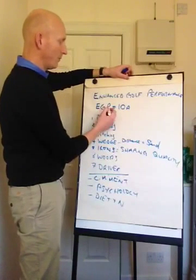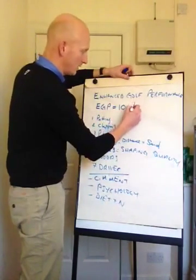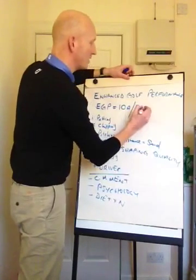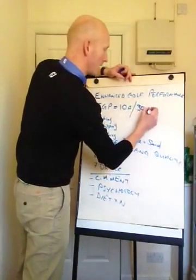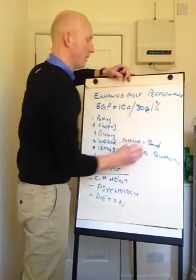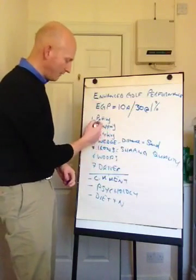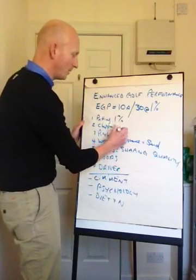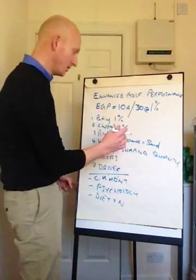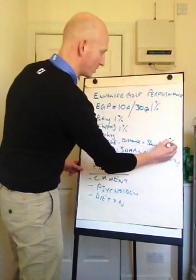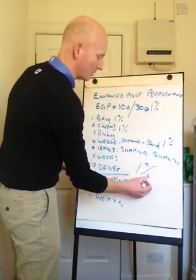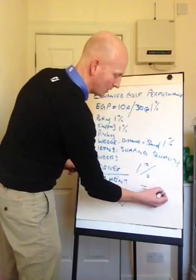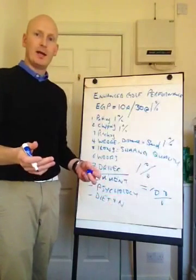We've got enhanced golfing performance equals 10 aspects divided by, let's say there's 30 days in a month at 1% of every aspect. 10 aspects. If I can improve my putting by 1%, and my chipping by 1%, over 30 days, my wedge play by 1%, everything by 1%. At the end of my 30 days, I'm going to be a 10% better golfer.